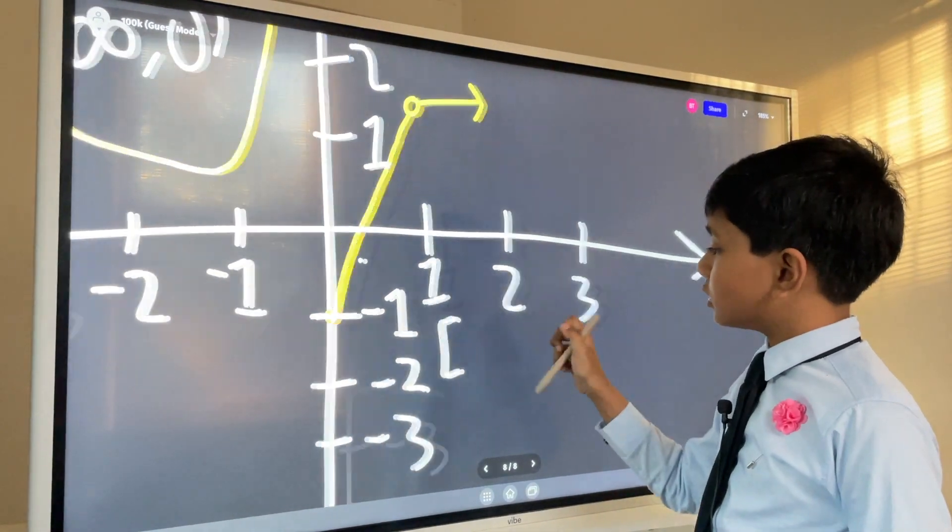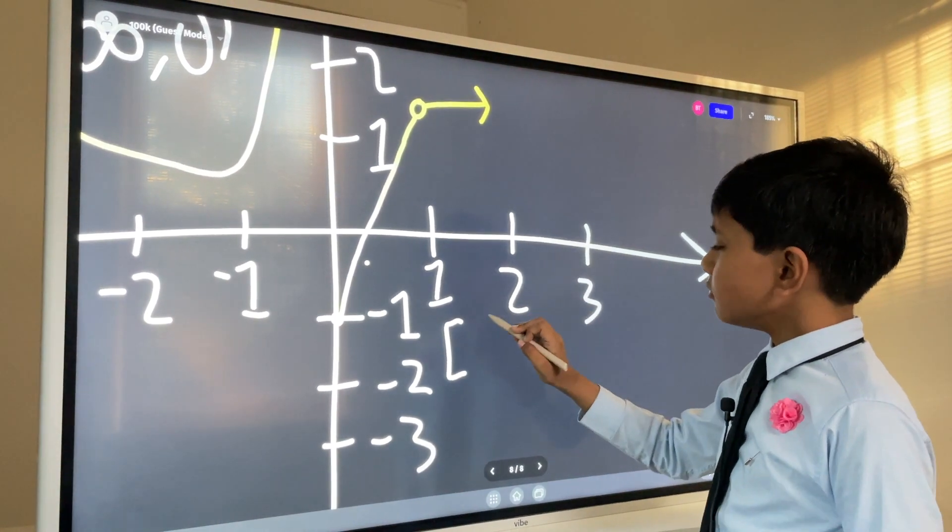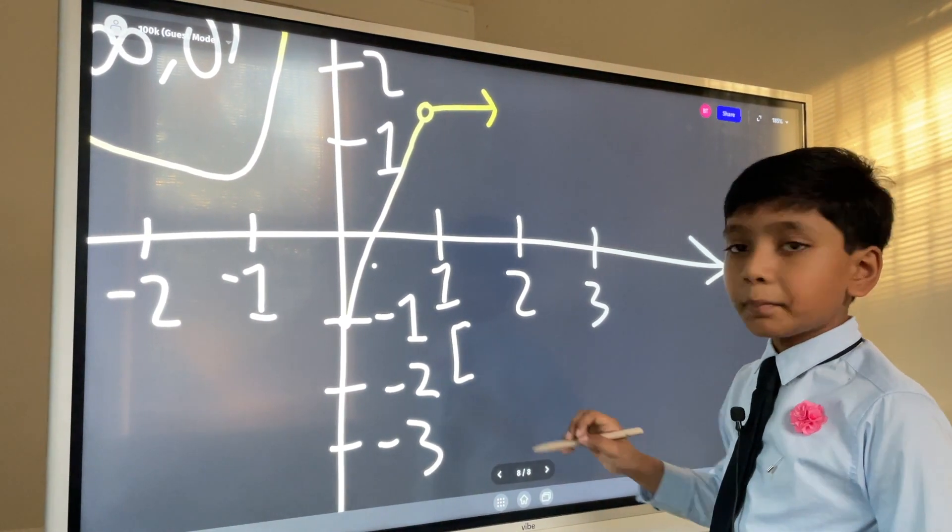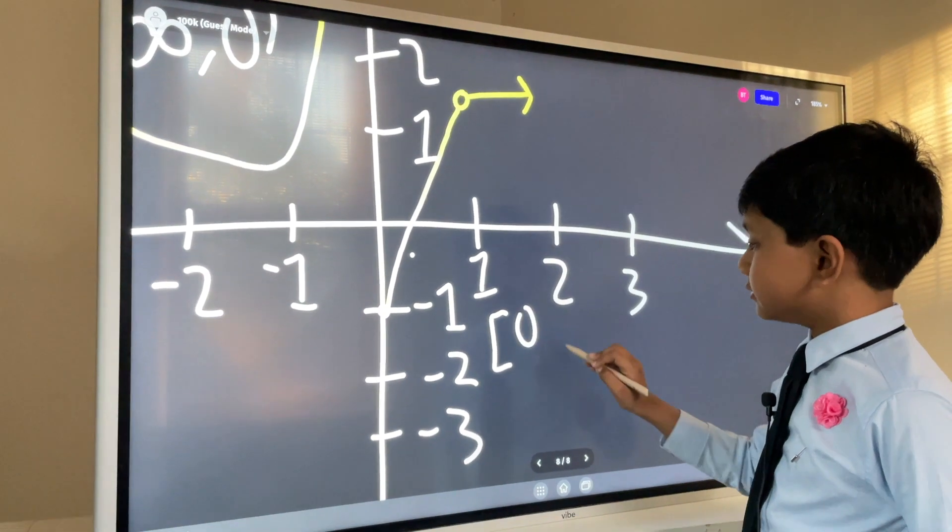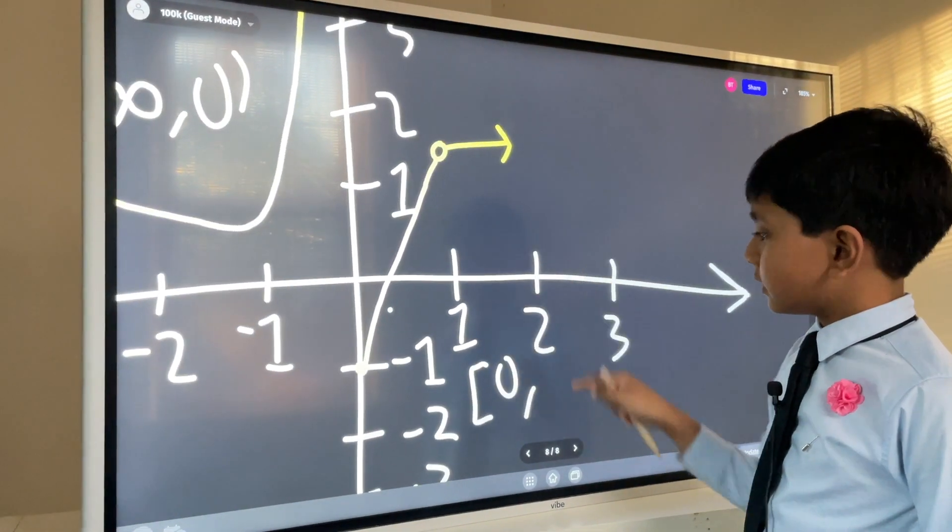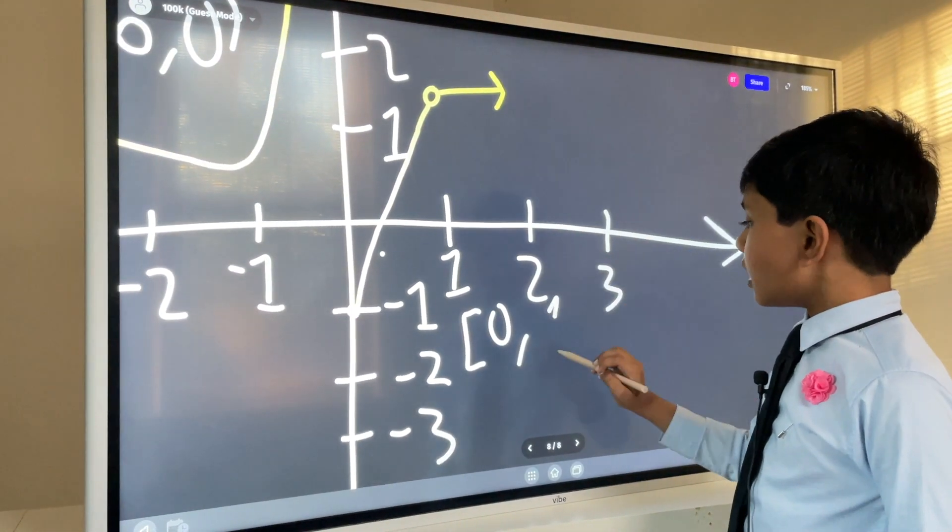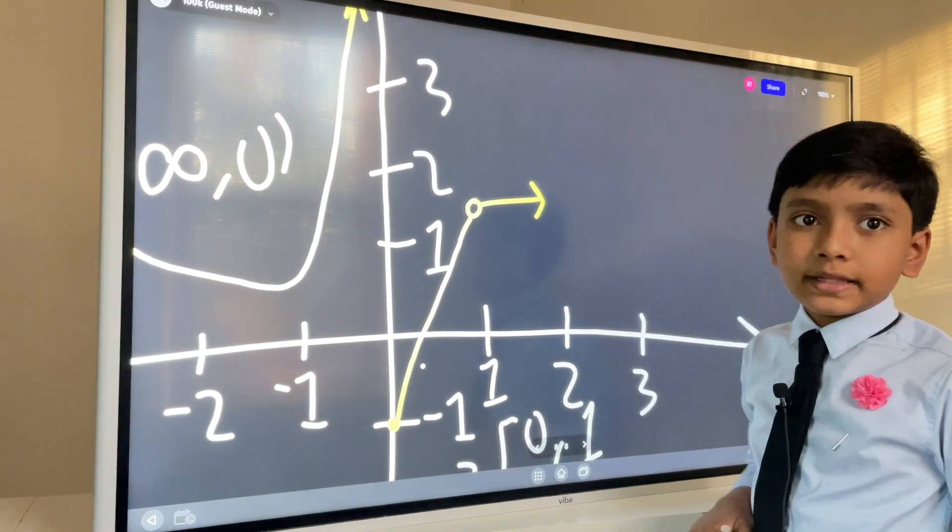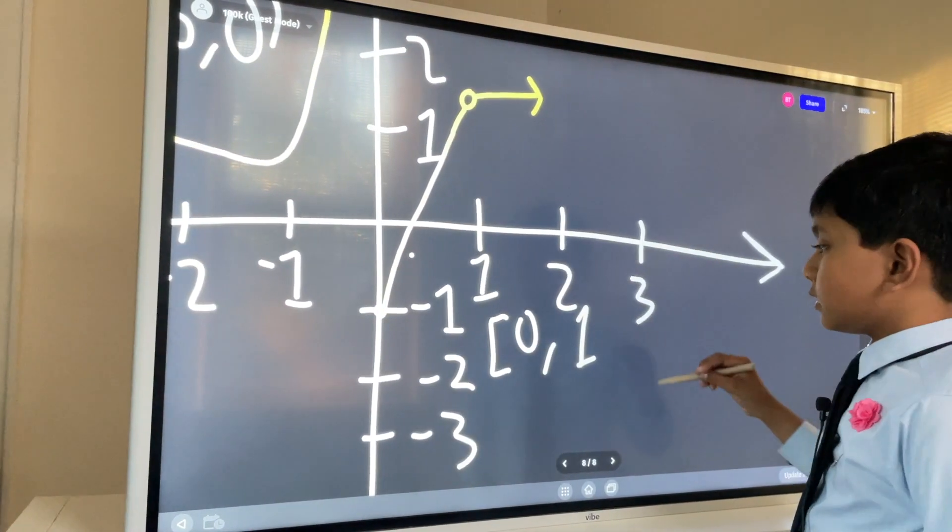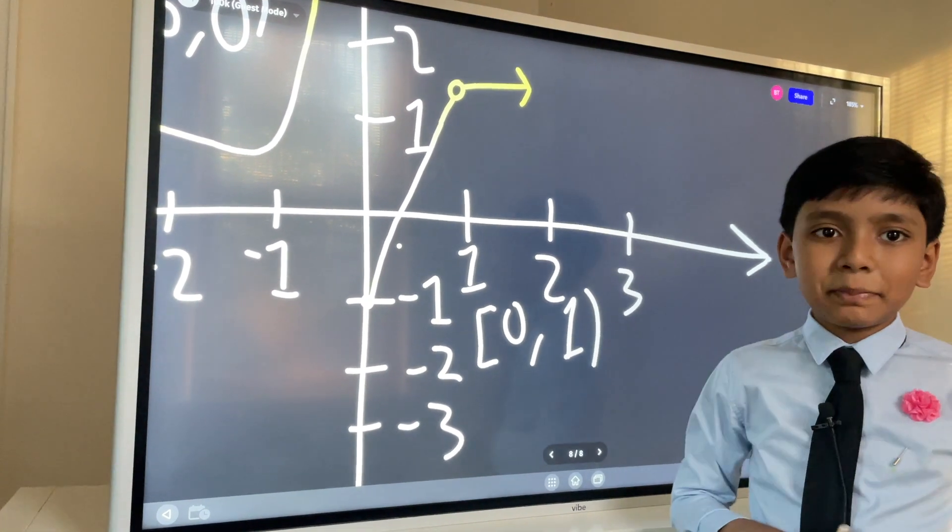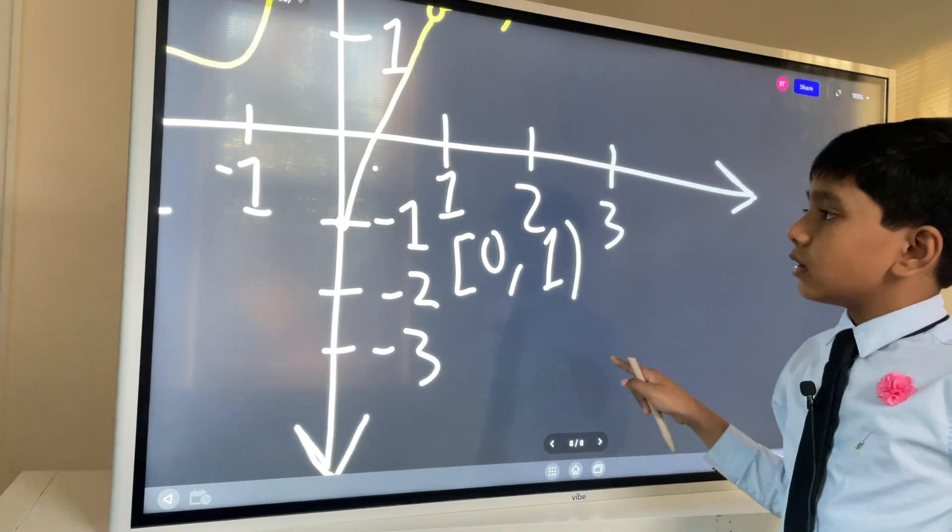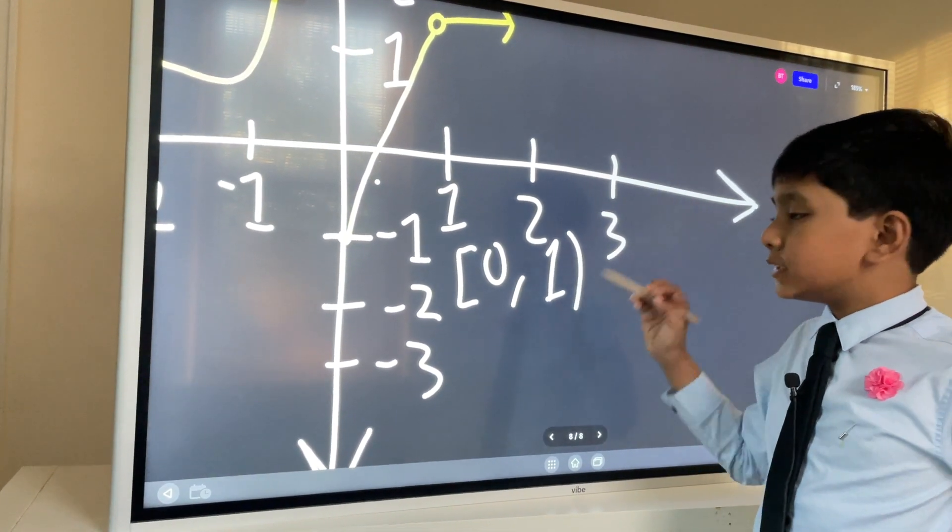So zero is included, so we would call that a closed part. And then we have zero, comma, one. But one, since it's an open discontinuity over here, doesn't get a pass. Because it doesn't get a pass into the number of numbers between them. So it's open.